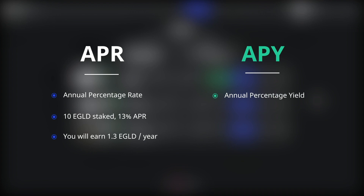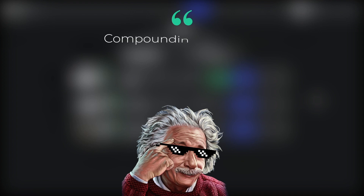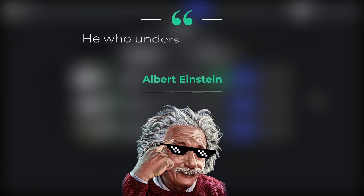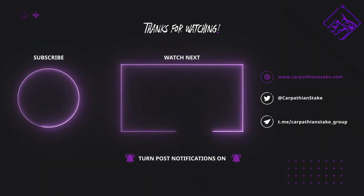So what is APY? APY stands for Annual Percentage Yield, and it is the interest you would earn if you were to further stake your rewards — in other words, compounding your rewards at your preferred or optimal interval. As Albert Einstein supposedly said, compounding is the eighth wonder of the world: he who understands it earns it, he who doesn't pays for it.